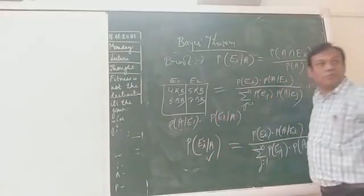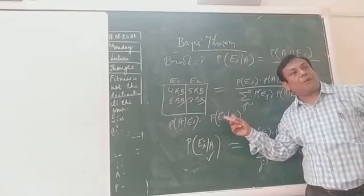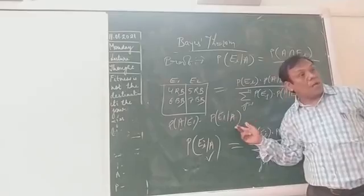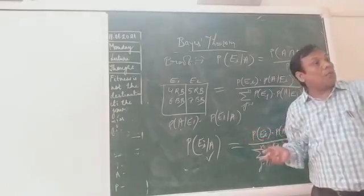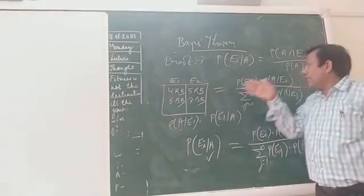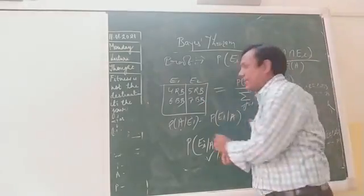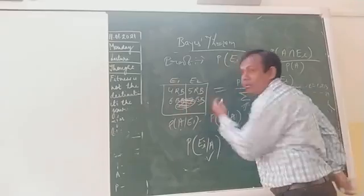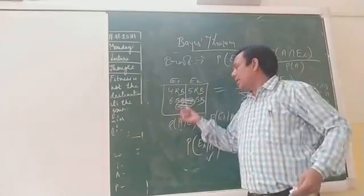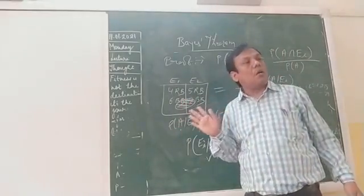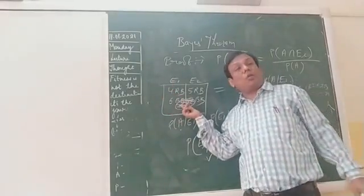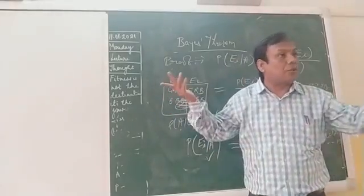So what I am asking? That one incident is happened already. What is the incident? Incident is that red ball is drawn. This incident is done. Now we have to find that this red ball you have drawn, very good. But from which bag? So what is the probability that this ball which you have drawn is from bag 1 or bag 2?